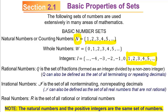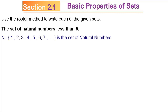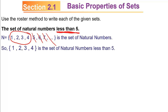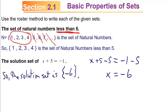Those are the kinds of things you'll need familiarity with. Use the roster method to write each of the given sets. The set of natural numbers less than 5: remember the natural numbers are 1, 2, 3, 4, 5, 6, 7, and so on. If you only want the ones less than 5, the answer is the set of elements 1, 2, 3, and 4. The solution set of x plus 5 equals negative 1: solving for x by subtracting 5 from both sides gives x equals negative 6, so the solution set is the set containing the single element negative 6.